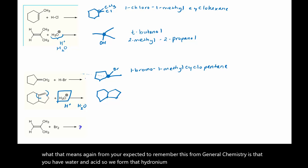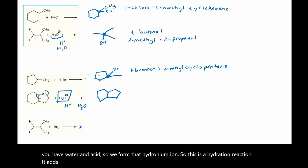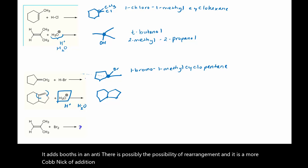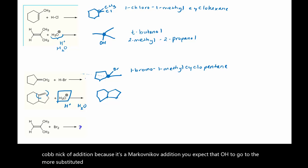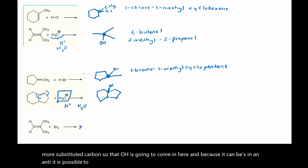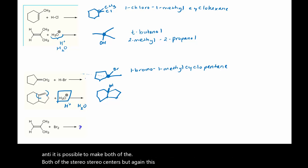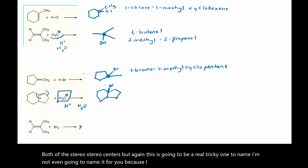So this is a hydration reaction. It adds both syn and anti. There is the possibility of rearrangement, and it is a Markovnikov addition. Because it's a Markovnikov addition, you expect that OH to go to the more substituted carbon, so that OH is going to come in here. Because it can be syn and anti, it is possible to make both of the stereocenters. But this is going to be a real tricky one to name, so I'm not even going to name it.